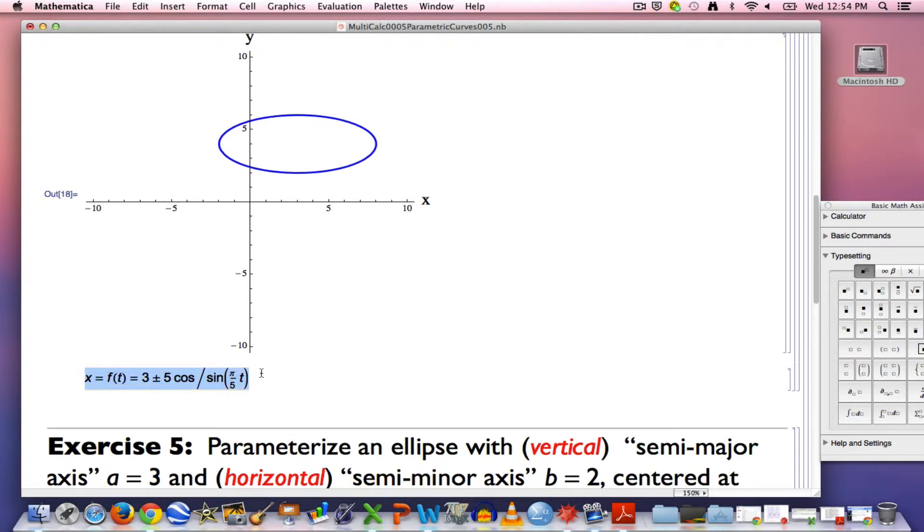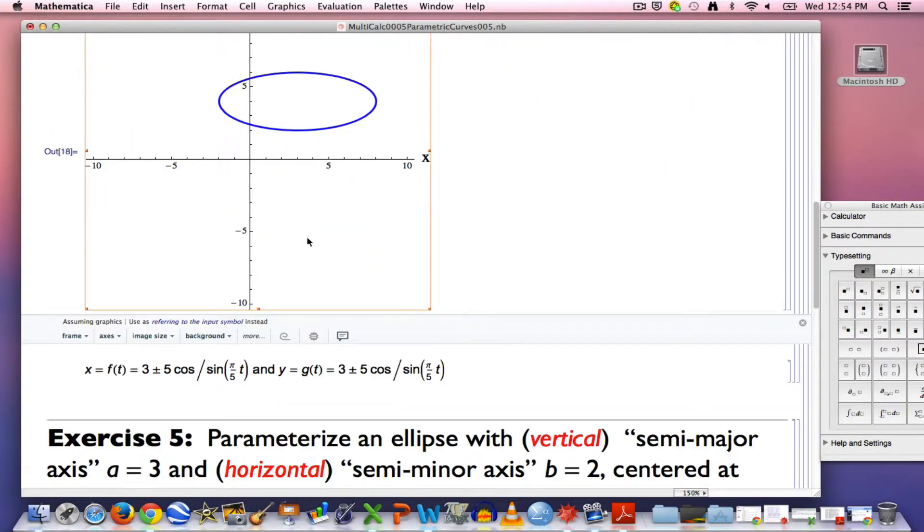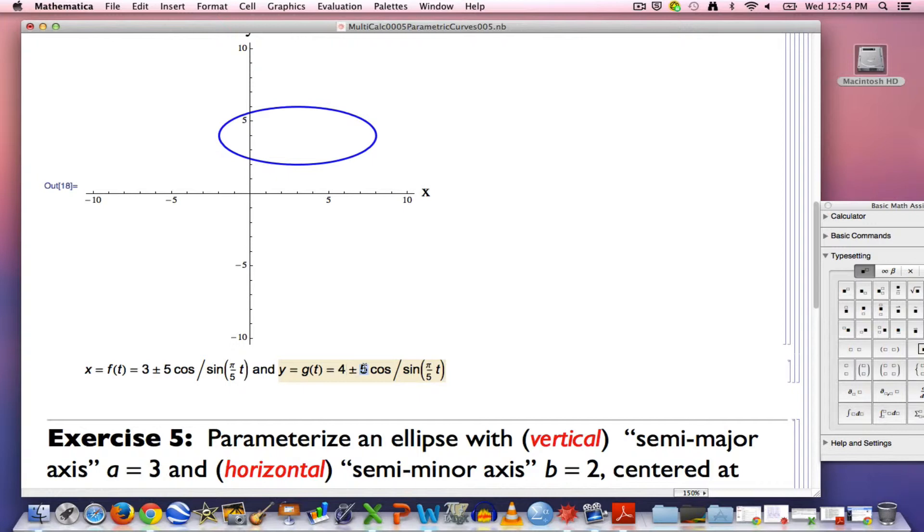The equation for g of t is going to be similar. y will equal g of t. Think vertically now. Well, the center in the vertical direction is at 4, so instead of a 3 here I'll have a 4. I'm still going to have a plus or minus. The amplitude in the vertical direction is the b, that is 2. I'm still either going to have a cosine or a sine of pi over 5 times t now.